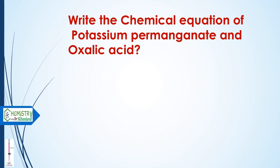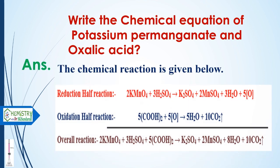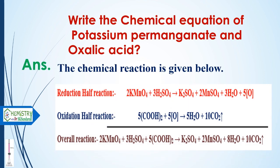The next question is: write the chemical equations of potassium permanganate and oxalic acid. This reaction has two halves. In the reduction half, potassium permanganate reacts with sulfuric acid to give nascent oxygen. In the oxidation half, the nascent oxygen reacts with oxalic acid to produce carbon dioxide.